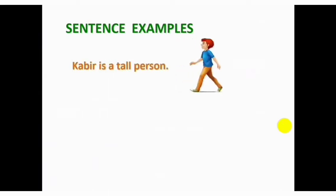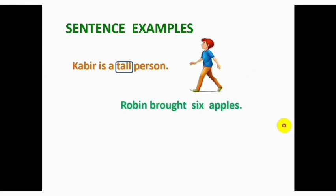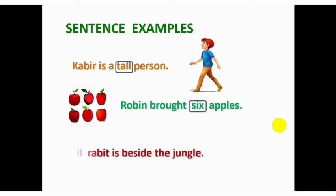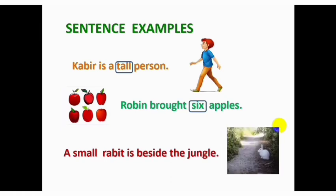Now, look at some sentence examples. Probier is a tall person. Here, tall is a quality that describes Probier. Robin brought six apples. Here, six is the quantity of apples which Robin brought. A small rabbit is beside the jungle. Here, with the help of small, we know about the size of rabbit. So, all these words are adjective.